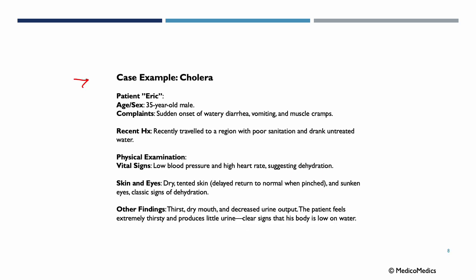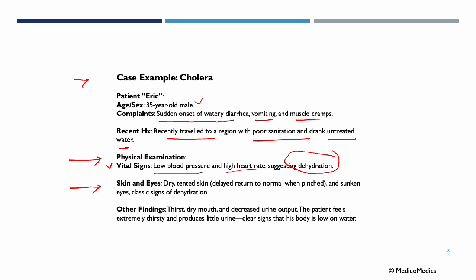Case example: Eric is a 35-year-old male presenting with sudden onset of watery diarrhea, vomiting, and muscle cramps. He recently traveled to a region with poor sanitation and drank untreated water. Physical exam reveals low blood pressure and high heart rate suggesting dehydration, dry tented skin, sunken eyes, thirst, dry mouth, and decreased urine output — all classic signs of dehydration.